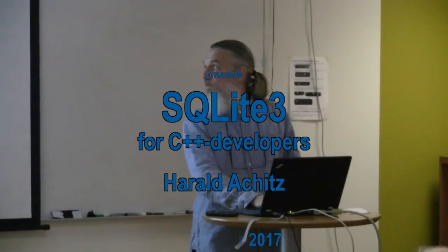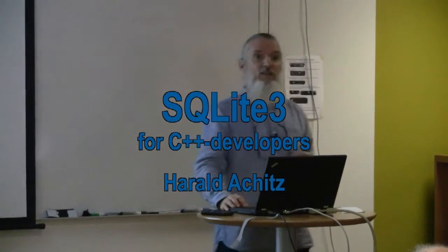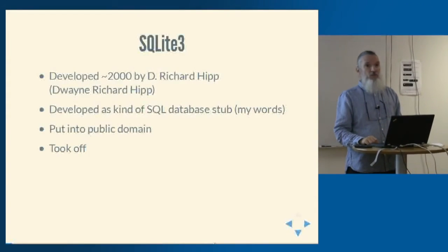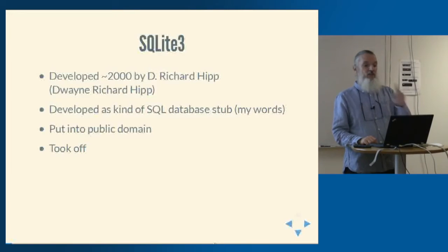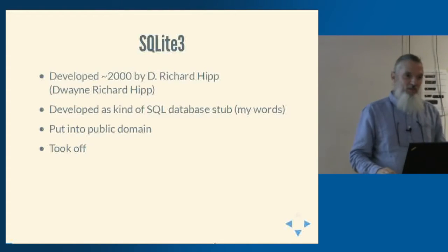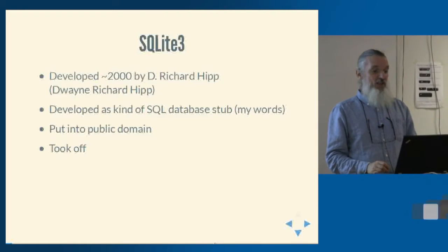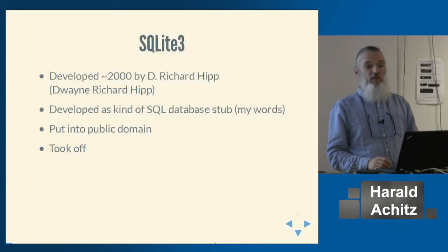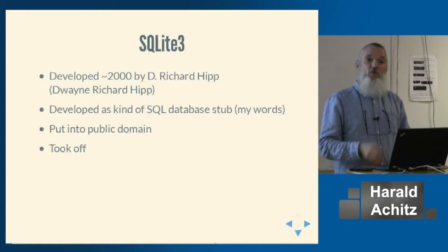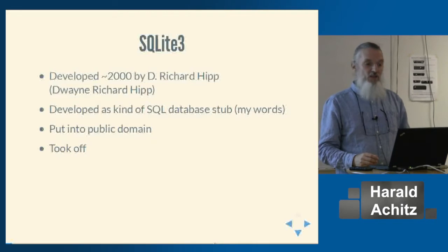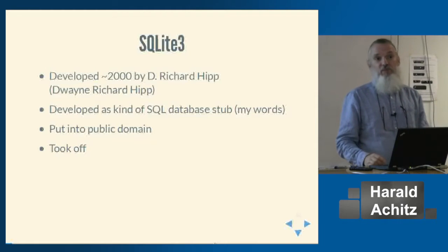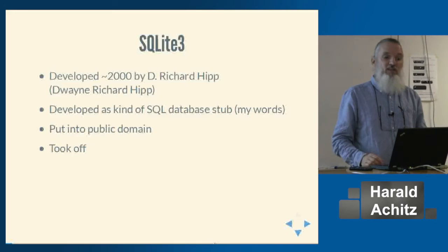SQLite for C++ developers. SQLite was developed around 2000 by D. Richard Hipp. It was developed as a kind of stub — he was tired of setting up a whole database system like PostgreSQL or Oracle just to create some GUIs. So he created basically a stub SQL server, then put the source code into public domain with no license, and it took off.